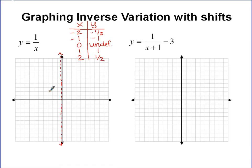Okay, let's plot those points and see if that's enough. Negative 2, negative 1 half. Negative 1, negative 1. 1 and 1, and 2, 1 half.